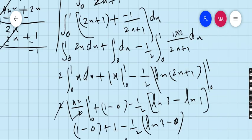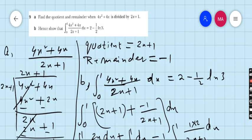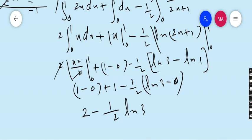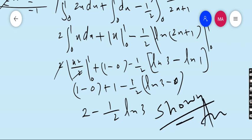What is the requirement? 2 minus 1 upon 2 ln 3, exactly same we achieved. Shown, answer.